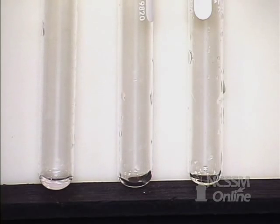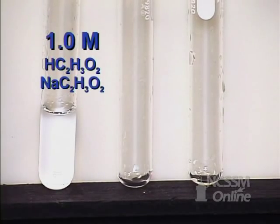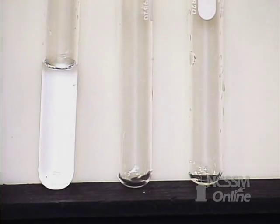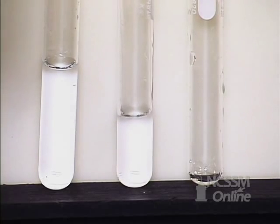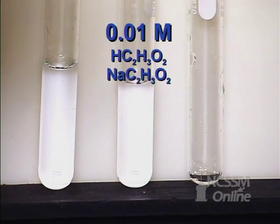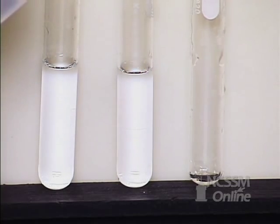In the first test tube, I'm going to put 1.0 molar acetic acid sodium acetate buffer. In the second test tube, I'm going to put the same buffer but a different concentration. This is a 0.01 molar buffer made from acetic acid and sodium acetate.